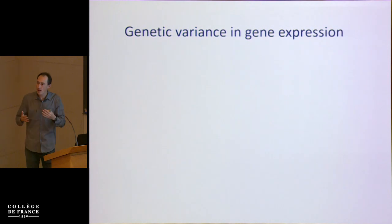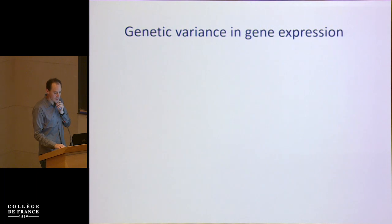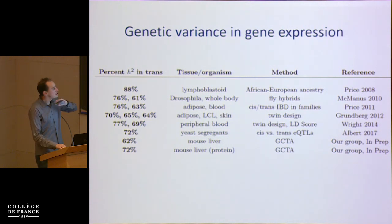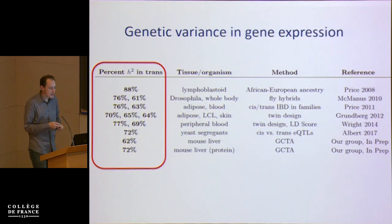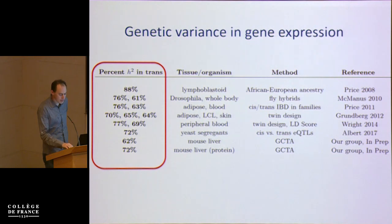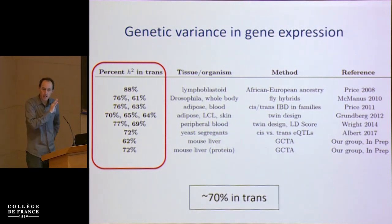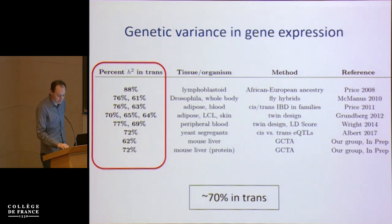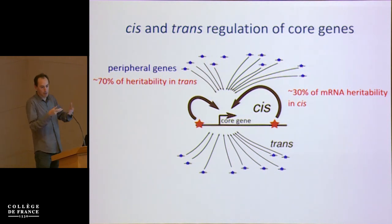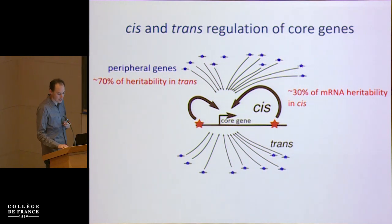A number of studies have used different designs — including heritability estimates in pedigrees — to estimate these effects. A literature review across a variety of statistical methods, organisms, and cell types suggests that the bulk of heritability of gene expression comes from trans effects, ranging across studies from about 60% to about 90%. Putting a number on this for the sake of argument, about 70% of the heritability is coming from trans effects. An illustration comparing cis- and trans-EQTLs in replication samples shows that cis-EQTLs have systematically much larger effect sizes than trans-EQTLs — and since variance depends on the square of those Z-scores, that difference is exacerbated further.